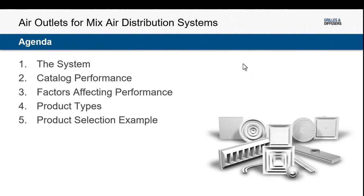We're going to start off by taking a quick look at systems, then moving into catalog performance and factors that affect performance, then look at different product types — or as I like to say, tools in the toolbox — and finish off with a product selection example.